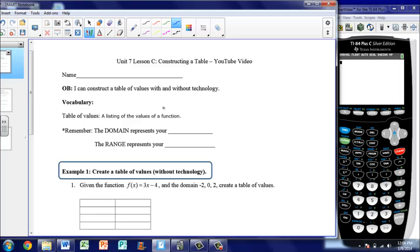The vocabulary from the section, the first is table of values. It's just a listing of the values of the function. It shows you in a chart form what are the x values and what are the y values that are associated with your function.